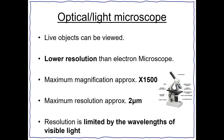The advantage of light microscopes is that you can view live objects. However, they have much lower resolution than an electron microscope. Resolution is the ability to distinguish between two points. The maximum magnification of an optical microscope is 1,500, and the maximum resolution is about 2 micrometres. The resolution is limited by the wavelength of visible light.